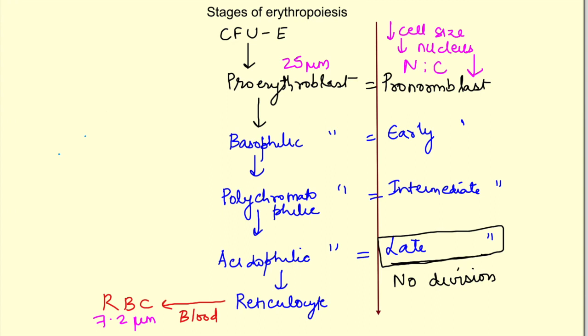Characteristics of each cell: First, proerythroblast. It will be a very large cell around 25 micrometers and its nucleus is also very large, almost completely occupying the cell. It just fills the cell and there is only a very small rim of basophilic cytoplasm, so cytoplasm is also blue in colour.